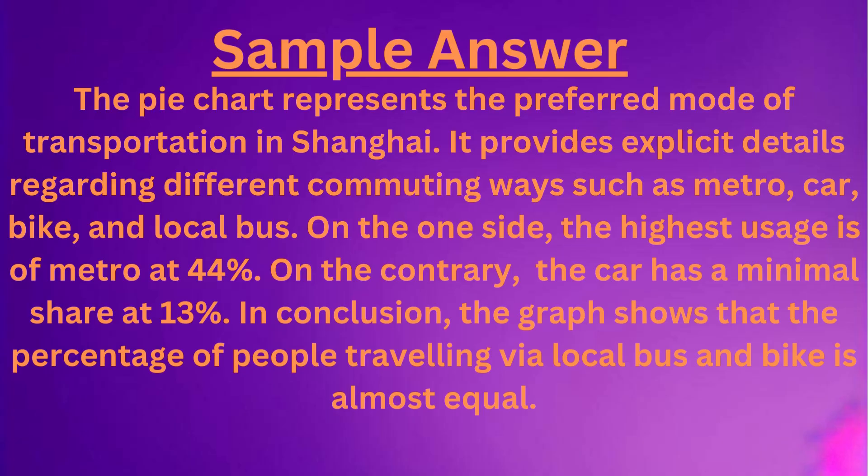The pie chart represents the preferred mode of transportation in Shanghai. It provides explicit details regarding different commuting ways such as metro, car, bike, and local bus.